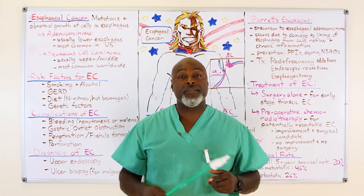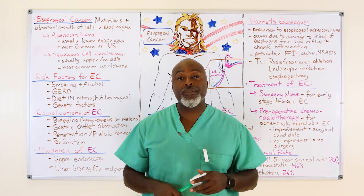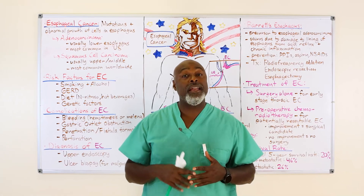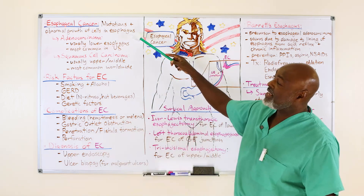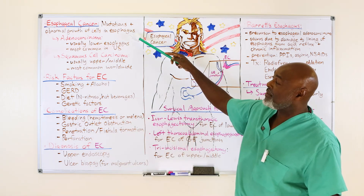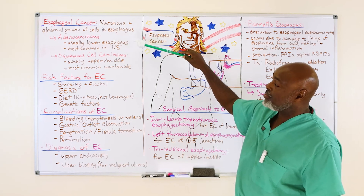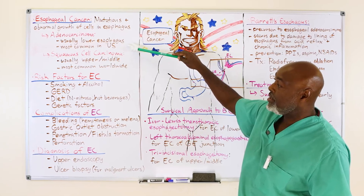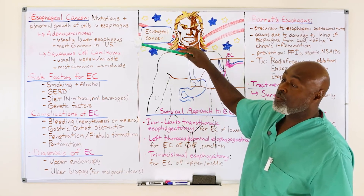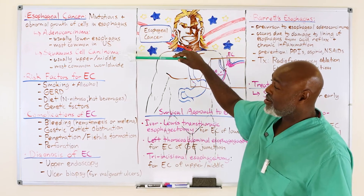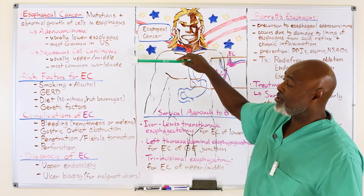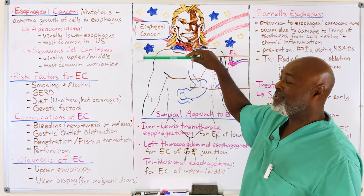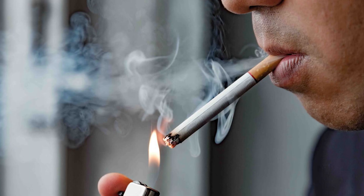We're just going to jump into it because a lot of the risk factors we already talked about. The biggest difference here is going to be the treatment, when you do treatment, and how you do treatment. Esophageal cancer involves mutations and abnormal growth of cells in the esophagus. Adenocarcinoma is usually in the lower third of the esophagus and is the most common, usually due to reflux. Squamous cell carcinoma is usually in the upper and middle third, more common worldwide, and usually due to alcohol and smoking.